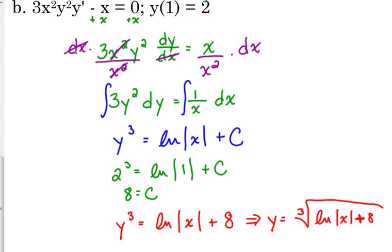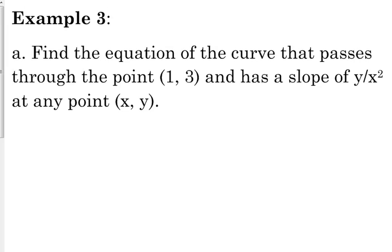That example wasn't as bad as that first example. A couple more problems here. This one says find the equation of the curve that passes through the point (1, 3) and has a slope of y over x squared at any point (x, y). Well, anytime you see the word slope, you should think derivative. So really, this is a differential equation, it's just kind of disguised in words.